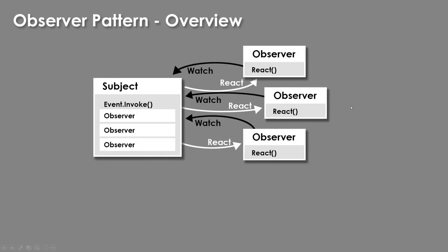The observer pattern can most easily be described as having a subject and an observer. Your subject is going to be the event or the thing that holds the event. And when I say event, this could be literally anything inside of your game — the player takes damage, the start of the level, an enemy died, a cut scene was triggered. If you can point to a single thing that happens in the level, that could be an event you use in this pattern.